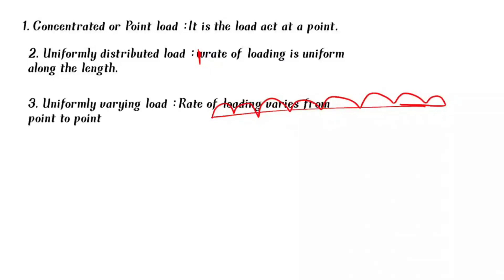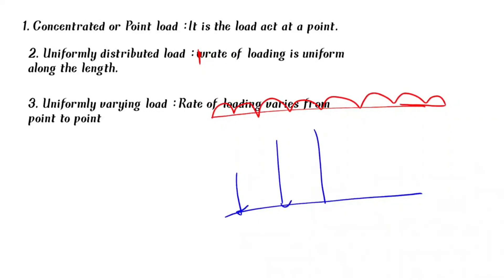Next, uniformly varying load. In this load type, the intensity is zero on one side and has some amount on the other side — it varies uniformly. This is the uniformly varying load.